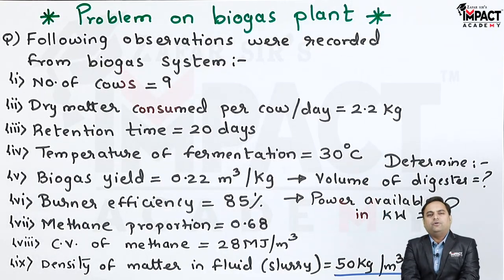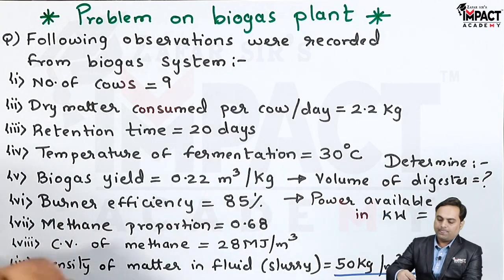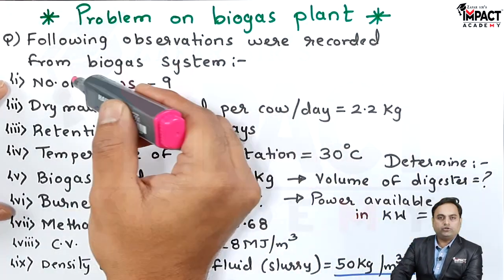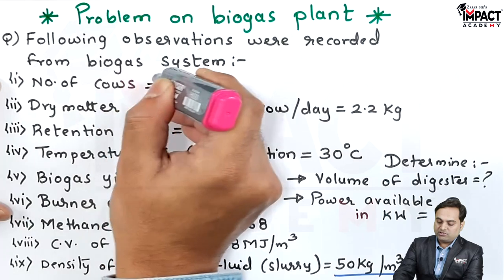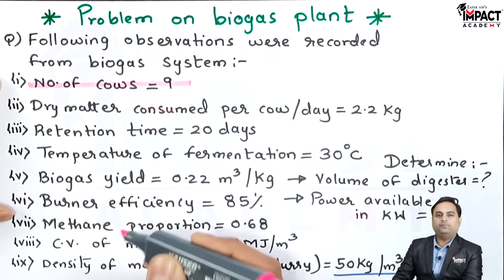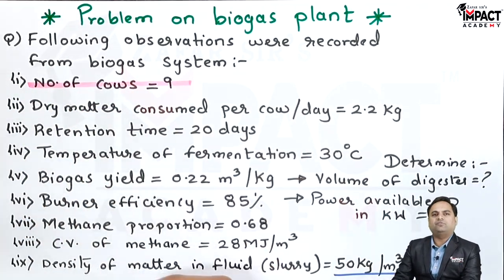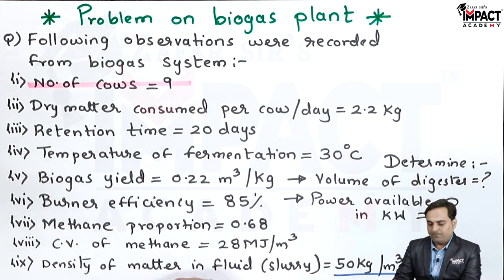Now, let us see a problem on a biogas power plant. Here is the question: following observations were recorded from the biogas system. The number of cows are required to produce the dry matter, also called cow dung, because the biogas plant will be operating on the cow dung slurry.